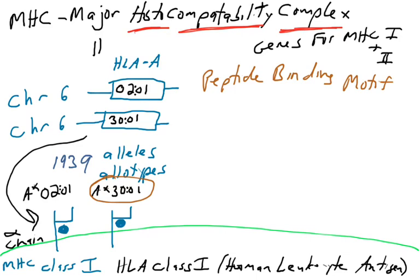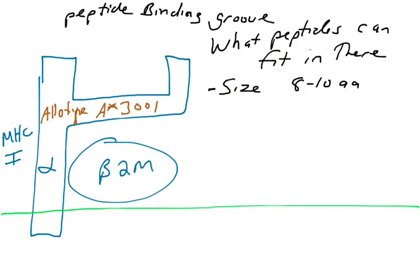Different alleles of the HLA-A genes hopefully have different peptide binding motifs. Let's look at the peptide binding motif of A3001 — this allele makes an allotype that binds peptides with a phenylalanine at position 2 and a phenylalanine at position 9. Here is the MHC class 1 molecule whose alpha chain is encoded by the 3001 allele. It has a peptide binding groove that fits peptides approximately 9 amino acids long, but it will not fit all peptides — only those with anchor residues of phenylalanine at position 2 and phenylalanine at position 9.